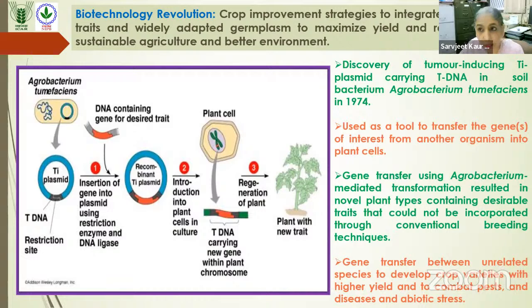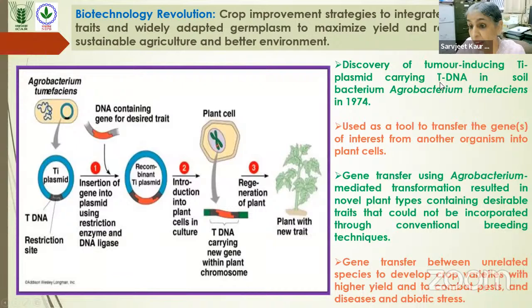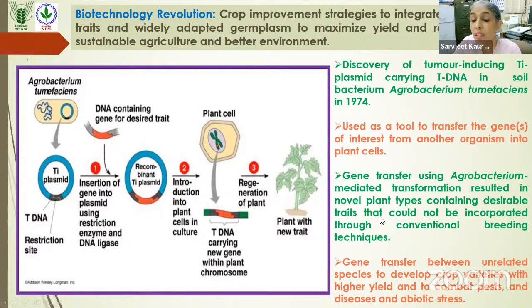These were the limitations with Bt biopesticides. During the 1970s and 1980s, the biotechnology revolution introduced crop improvement strategies to integrate the best of biotechnological traits with widely adapted germplasm, to maximize yield and reduce cost for sustainable agriculture and better health. The credit for much of this revolution goes to the bacterium Agrobacterium tumefaciens, which lives in the soil and carries a plasmid with T-DNA (Transfer DNA) that can be transferred to plant cells. This was used as a vector to transfer genes of interest from another organism into plant species.